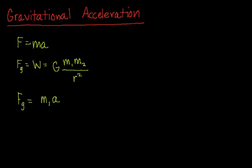And here we see that a is everything else in here that does not include m1. So this is the gravitational constant, r squared, and m2. That's all of this. This is a.